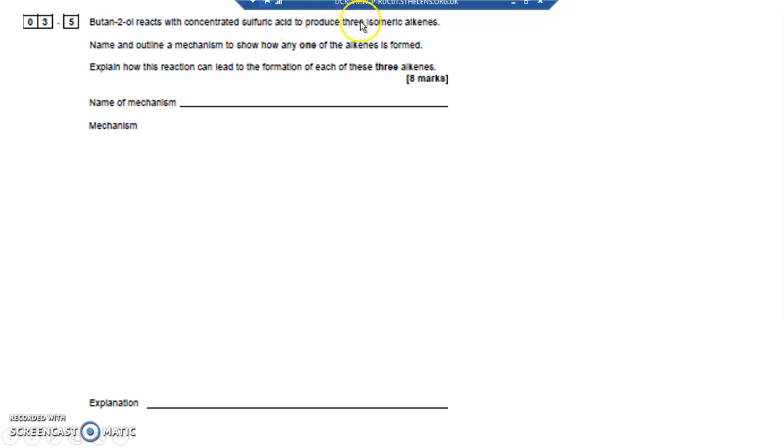So in that way it can produce two isomeric alkenes, two isomers with a double bond. Because what it does is when it takes the OH off, if it takes the H to the left and removes water, it leaves a double bond between those two carbons. Or if it takes an OH and then removes an H to the right, it creates water and produces a double bond to the right of the COH.